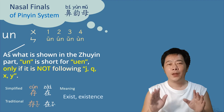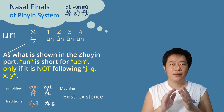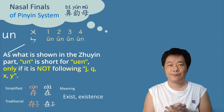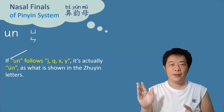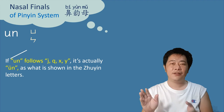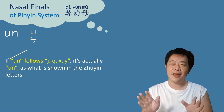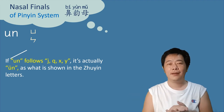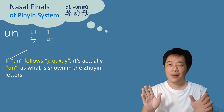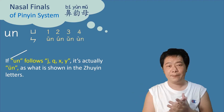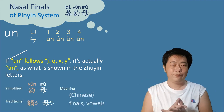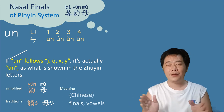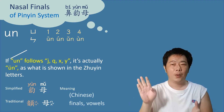Example: 存在 (cúnzài) — exist, existence. When you see 'un' after J, Q, X, or Y, it's actually 'üen' (yūn). So it sounds like 云 (yún). Tones: yūn, yún, yǔn, yùn. Example: 韵母 (yùnmǔ) — Chinese finals or vowels.